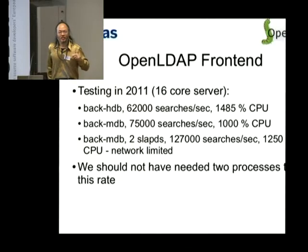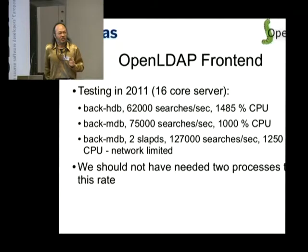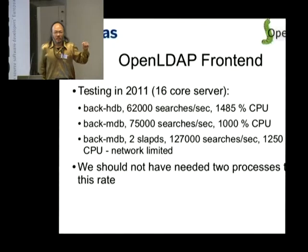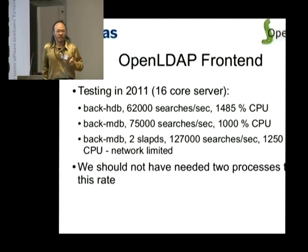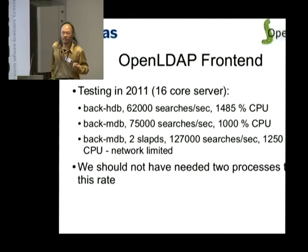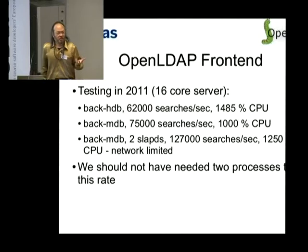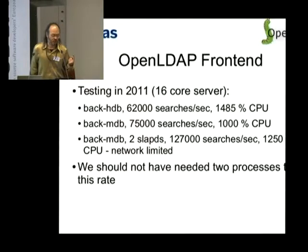Back in 2011, we discovered through testing that we could get much higher throughput rates with MDB than Berkeley DB. We couldn't actually max out performance on the server using a single SLAPD process. With a single back-MDB instance, we could get to 75,000 searches per second. But if I started a second process pointed at the exact same database, I could get up to 127,000 searches per second — at which point our network was saturated. We shouldn't actually need to run two processes on one database to get to that rate; we should be able to do this with just one process.